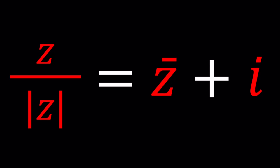For these kinds of equations, we have a general method that we're going to use. But first of all, notice that since we're dividing by the absolute value of Z, Z cannot be 0. Because if Z equals 0, that implies the absolute value of Z equals 0, which is impossible in this case. So under those conditions, let's go ahead and cross-multiply.